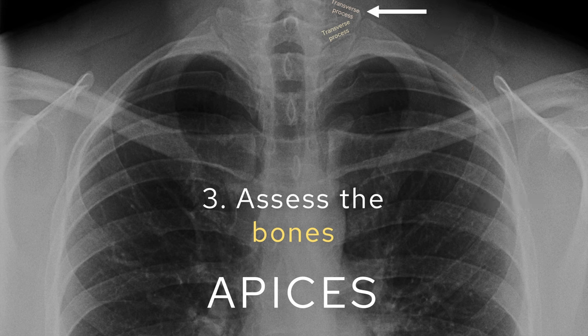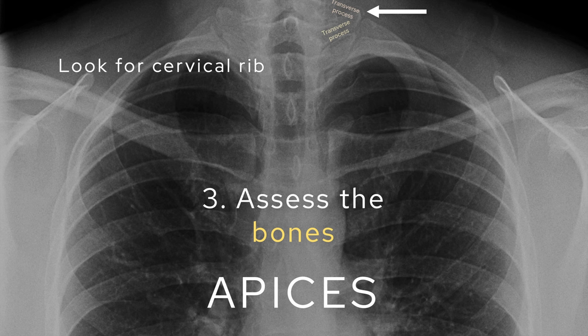Once I've done that, I glance upwards to check for a small rib coming off the C7 vertebral body, which might represent a cervical rib. This is important because if the patient ever develops neurological symptoms in one of their arms in the future, you've got a good reason for why that might be.